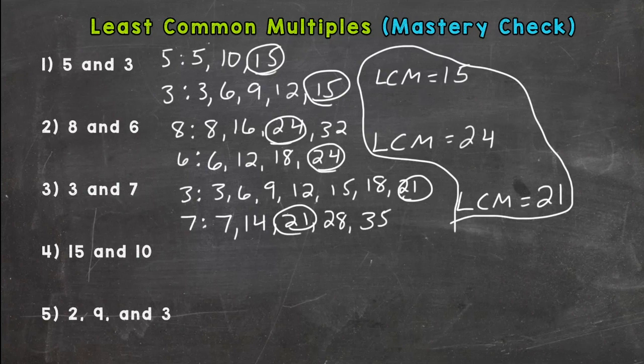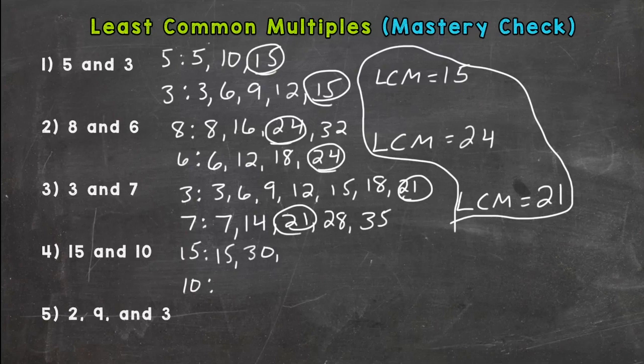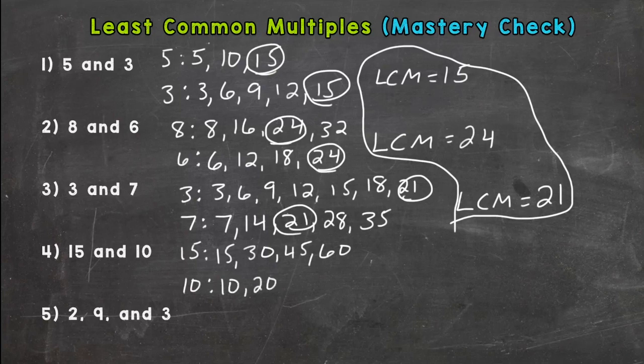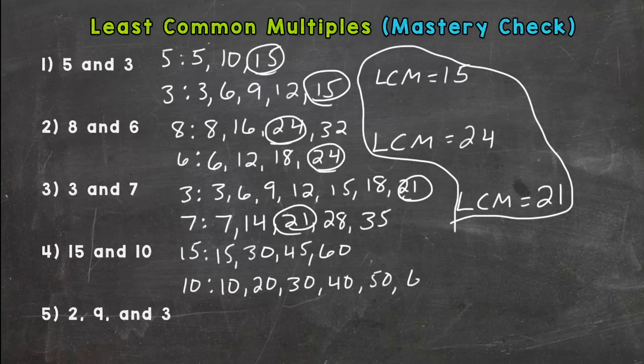Number 4, 15 and 10. 15, 30, 45, 60. 10, 20, 30, 40, 50, 60. Looks like we have one in common at 60, but this is why I always say double-check.